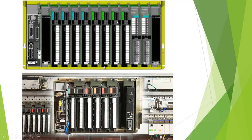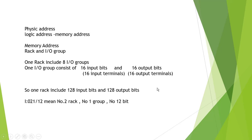Here is the PLC file — it looks like this. We talk about it having a physical address and a logical address. Logical address is just a memory address. The memory address includes a rack number and an IO group. This rack number and IO group are just part of the memory address.